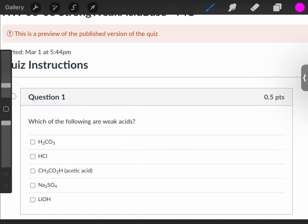For this problem, you need to know how to distinguish a strong acid from a weak acid. Strong acids, there are only seven of them.